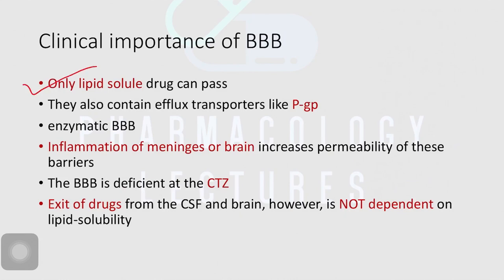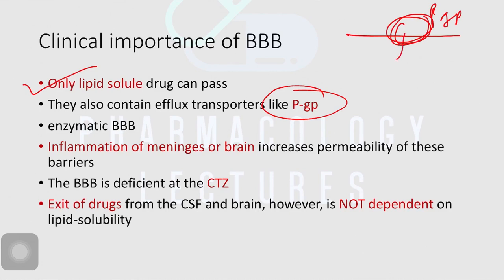Only lipid-soluble drugs can pass through the blood-brain barrier and go into the brain to produce their action. There are also pumps called P-glycoproteins, which we have seen in the absorption topic. These are pumps present on the cell membrane whose role is to pump out drugs or toxins from within the cells. These pumps are also present in the blood-brain barrier, throwing out toxins if they get exposed to brain cells. There are also enzymatic blood-brain barriers with enzymes that destroy drugs, toxins, or chemicals which are dangerous to brain tissue.